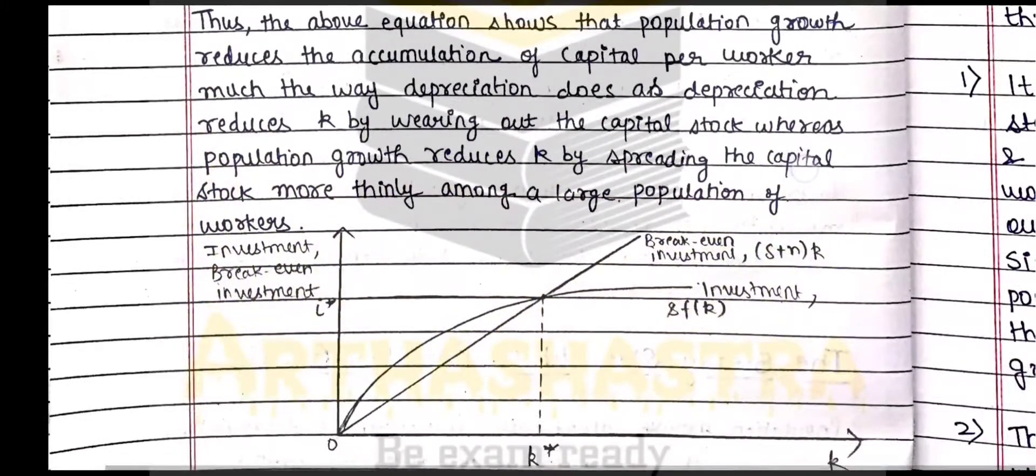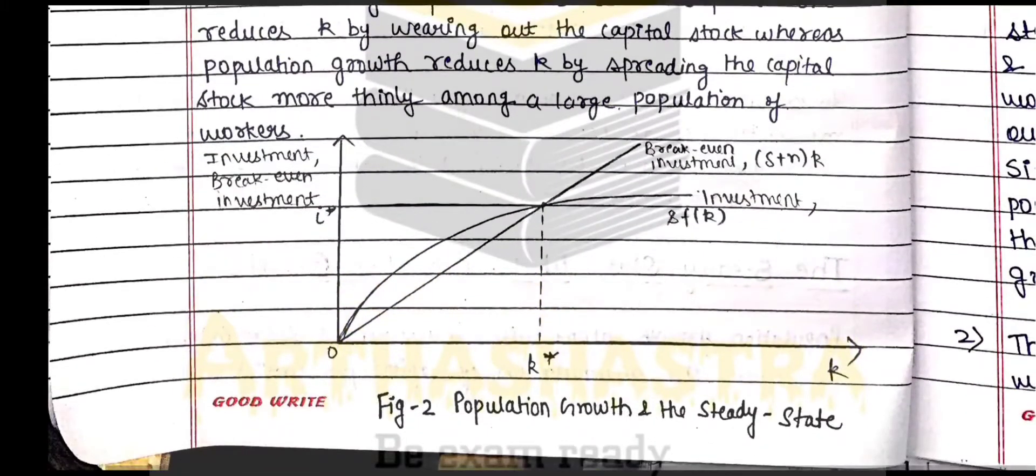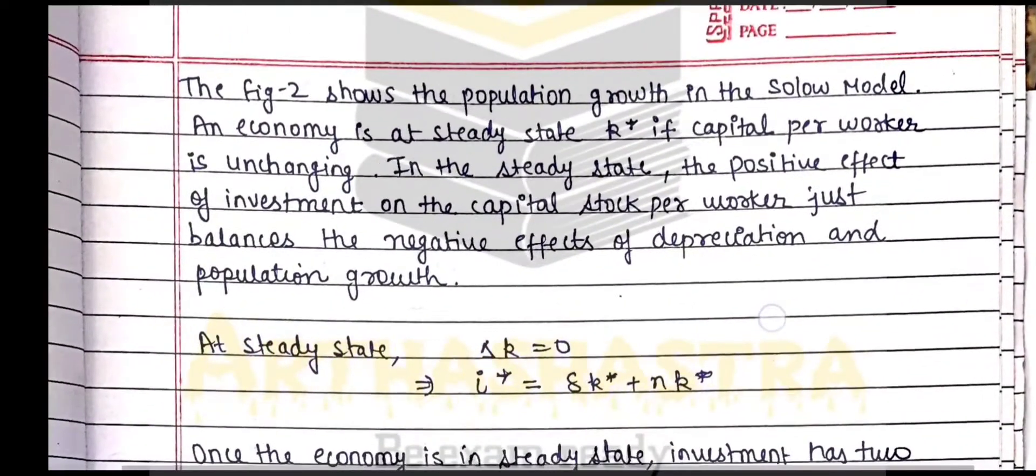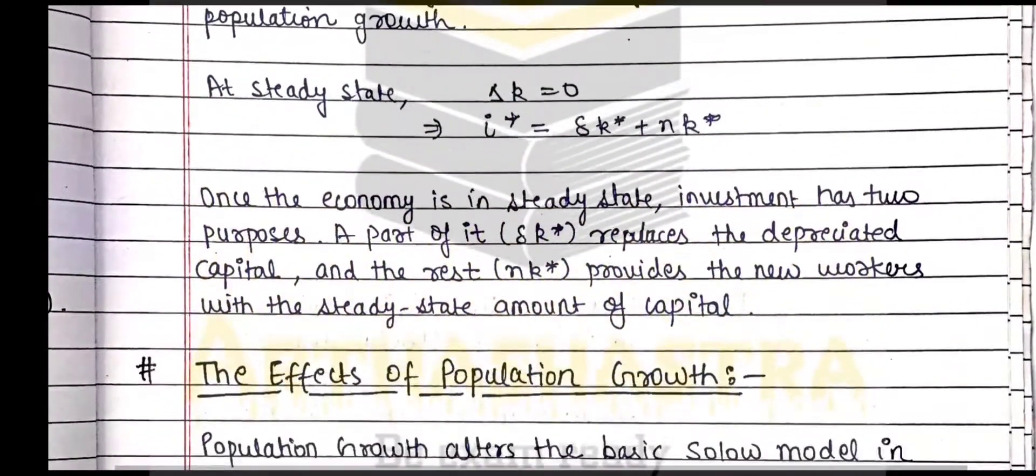And we have made again a new diagram, and now investment has changed to break-even investment because it now includes depreciation as well as population growth, explaining the mechanism of the figure in words, and we derive the condition for the steady state.